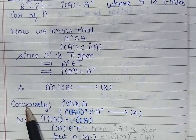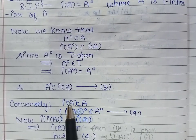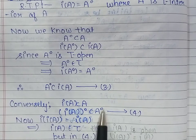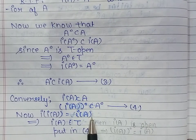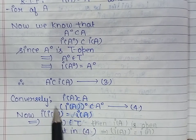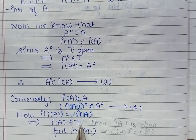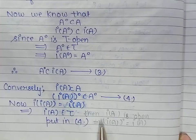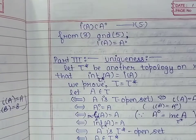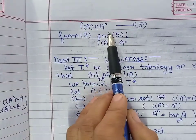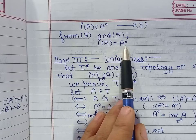Conversely, because I of A is contained in A, its interior with respect to topology τ will be contained in A interior. By the fourth property, I of I of A equals I of A, and by the definition of τ, I of A belongs to τ, meaning I of A is τ-open. Therefore the interior of I of A equals I of A, giving I of A contained in A°. Combining equations 3 and 5, we get I of A equal to the τ-interior of A.